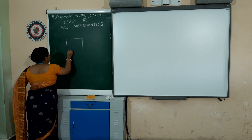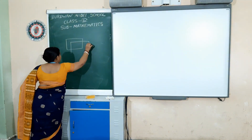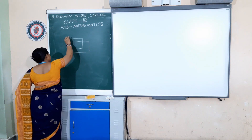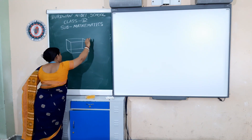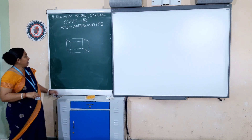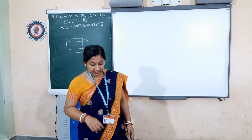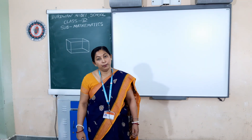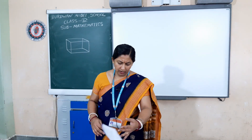I am drawing a brick on the board. A brick is in a rectangular form — you can also say it is a cuboid. All the faces of a brick are rectangular. Here you can see that there are six faces of a brick.